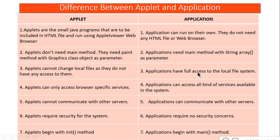Applets cannot change local files as they do not have access to them, whereas applications can. Using applets you can only access some browser-related services, but using an application you can access any kind of service. Applets belong to a server — they cannot change anything or access any resource on your client machine, nor communicate with other servers. To begin the applet we use the init method, which stands for initialize, whereas applications use the main method.